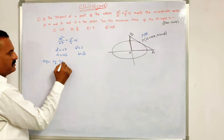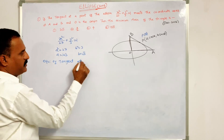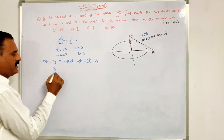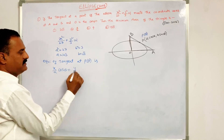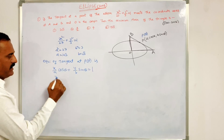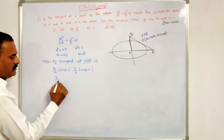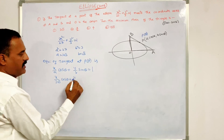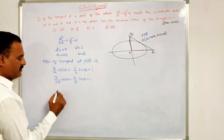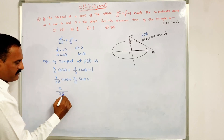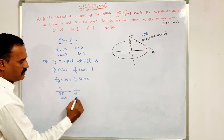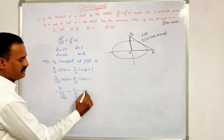That is A = 3√3 and B = √3. Therefore the equation of tangent at P(θ) is x/(A cosθ) + y/(B sinθ) = 1. Substituting: x/(3√3 cosθ) + y/(√3 sinθ) = 1.